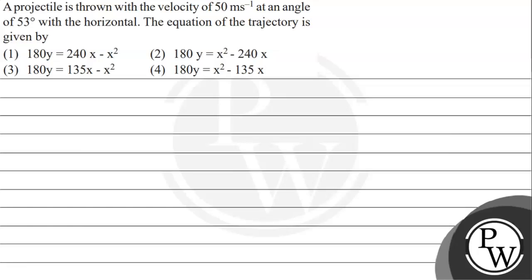Hello guys, let's take a given question. The question says a projectile is thrown with a velocity of 50 meter per second at an angle of 53 degrees with the horizontal. The equation of the trajectory is given by: option 1 — 180y = 240x − x²; option 2 — 180y = x² − 240x; option 3 — 180y = 135x − x²; option 4 — 180y = x² − 135x.